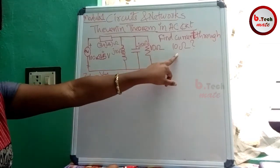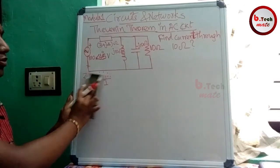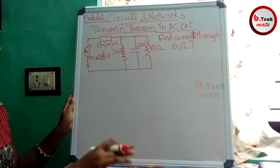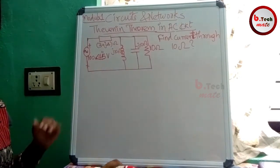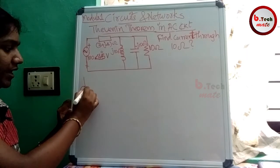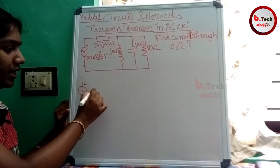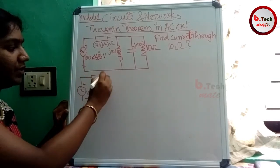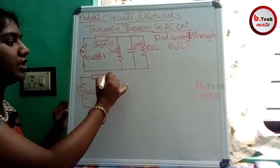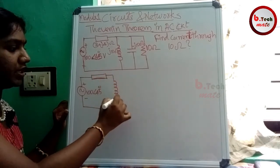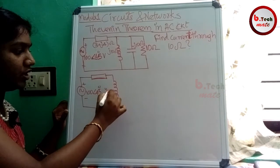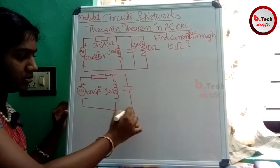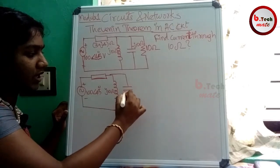Find the current through the 10 ohm resistor — the 10 ohm will be the load resistor. The next step is to remove the load. This is the AC voltage source: 100 angle 45 degrees. This is the impedance — this is the combination of the circuit. This is J10 normal, and this is the value of J10.